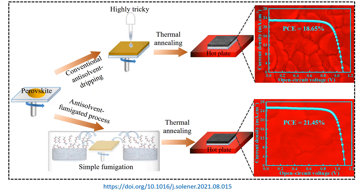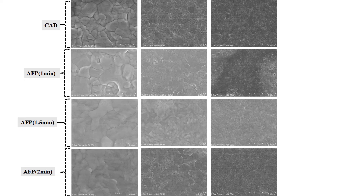On the other hand, in the anti-solvent fumigation process, we have a Petri dish filled with anti-solvent — in this case diethyl ether — and we spin the perovskite precursor inside this closed container. After thermal annealing, we got smooth morphology and large grain size with reduced grain boundaries, which is beneficial for performance, and we achieved a power conversion efficiency of up to 21.45 percent.